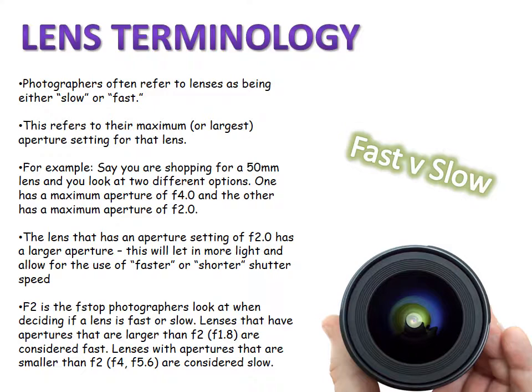f2 is the f-stop photographers look at when deciding if a lens is fast or slow. Lenses with apertures larger than f2, like f1.8 or f1.4, are considered fast. Lenses with apertures smaller than f2, like f4 or f5.6, are considered slow. Fast lenses are more expensive because they're coveted by photographers — they can be used in low-light situations without flash, since they have wide openings that let in a lot of light.